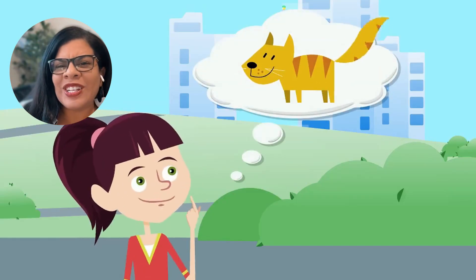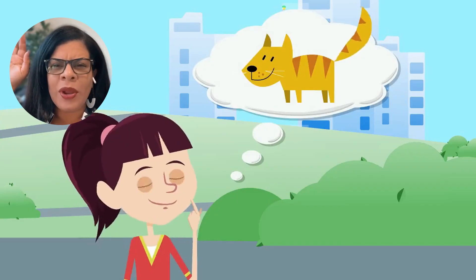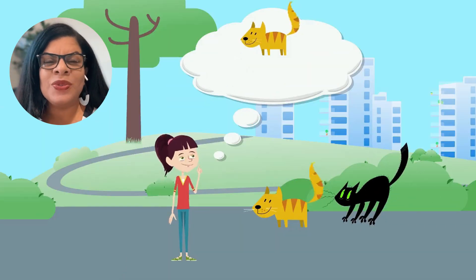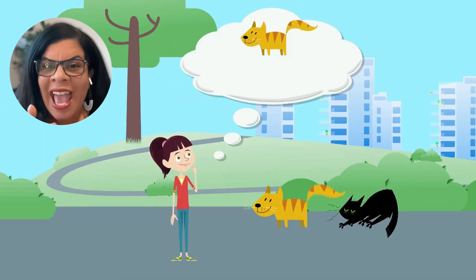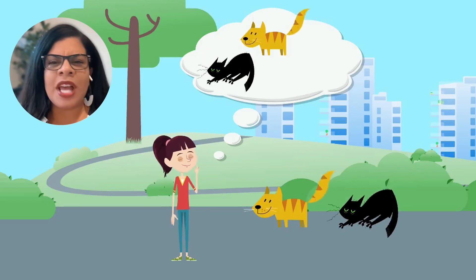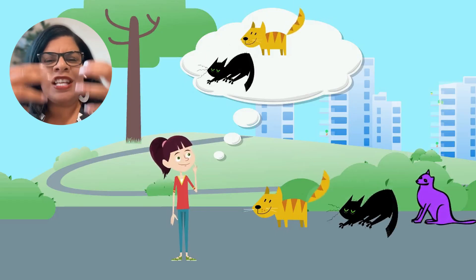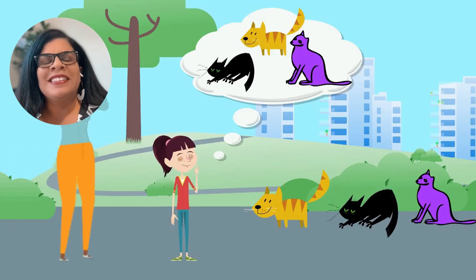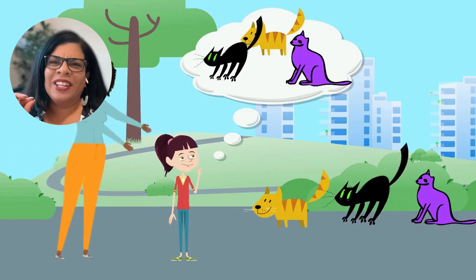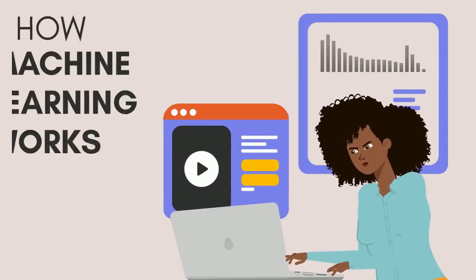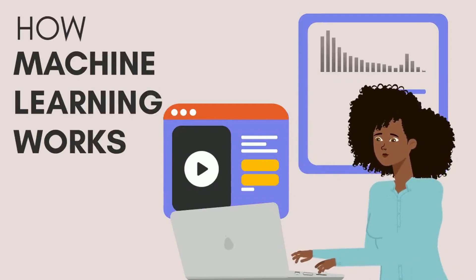Cats are furry. They have whiskers. They have pointy ears. And a little later, another cat strolls by and you say, cat — because you recognize it. You're learning. Each time you see a new cat, you're adding to what you know about cats. Here's the really cool part: this is almost exactly how machine learning works in its simplest form.